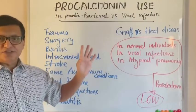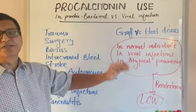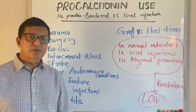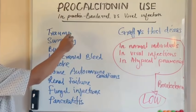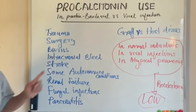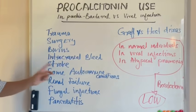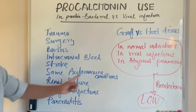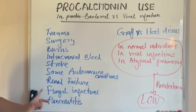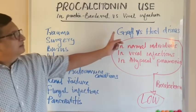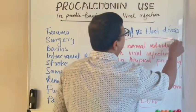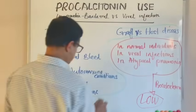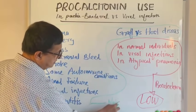Other conditions that can cause raised procalcitonin include trauma, surgery, burns, intracranial bleed, stroke, some autoimmune conditions like Kawasaki disease (not all inflammatory autoimmune conditions), renal failure, fungal infections, pancreatitis, and graft-versus-host reaction. So these things can cause raised procalcitonin even without bacterial infection.